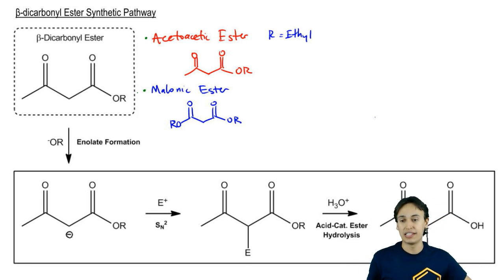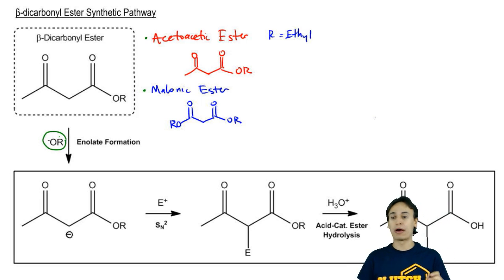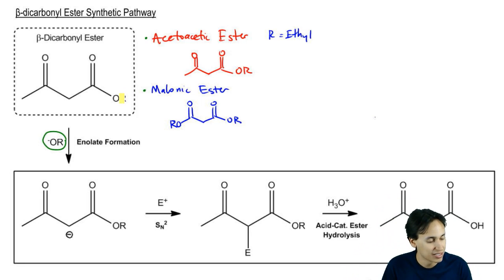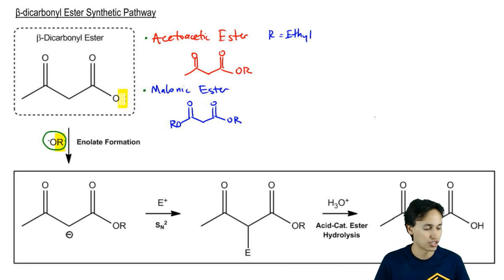Then what you get is that the first step is going to be an enolate formation. The base we're going to use, we're going to be careful about it. We want to make sure if we're using an oxide base that we're using a base that contains the same R group as the R group in my ester. Does anyone have an idea of why that's important?